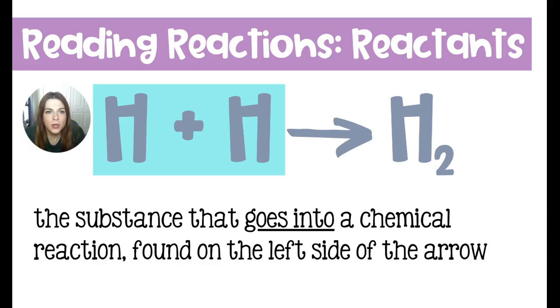So getting into reading chemical reactions, typically you'll have something that looks like this. A lot of the time it's more complex. This is maybe the first reaction that ever happened in the entire universe, so it's a good place to start. The substance that goes into a chemical reaction is found on the back end of the arrow, typically on the left, and those are called the reactants.